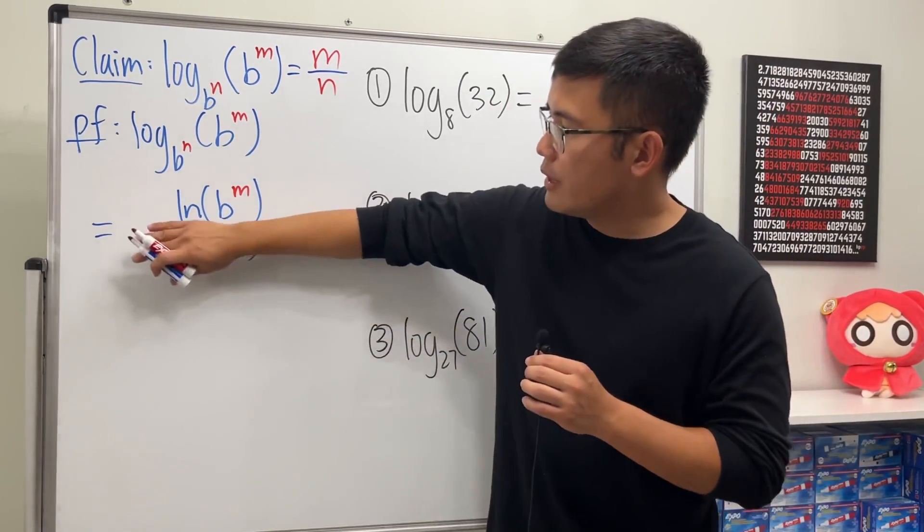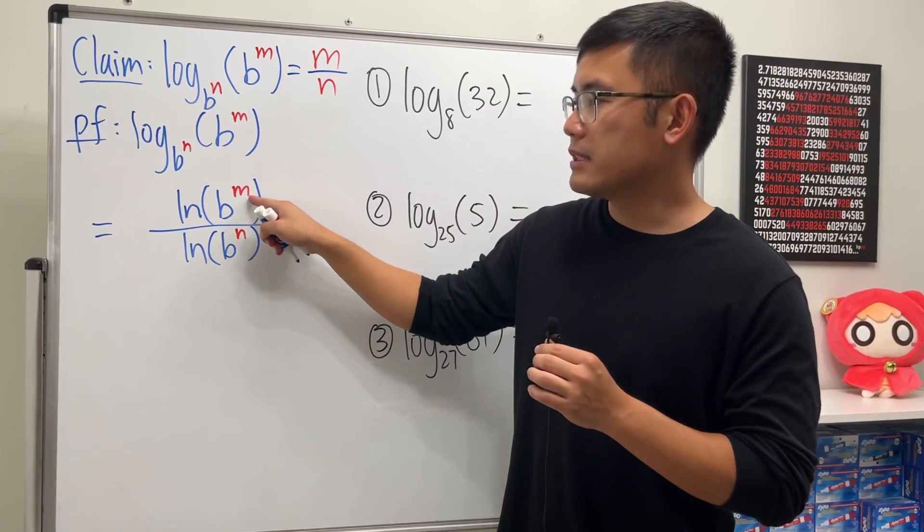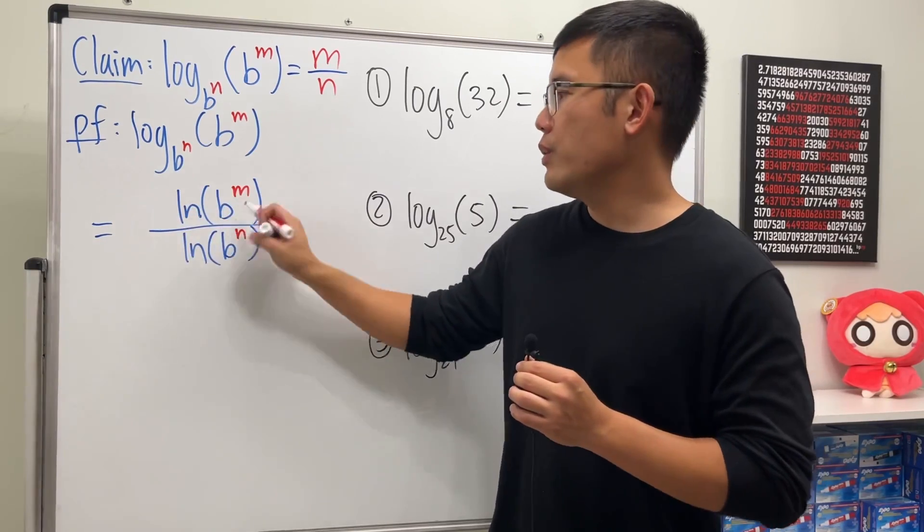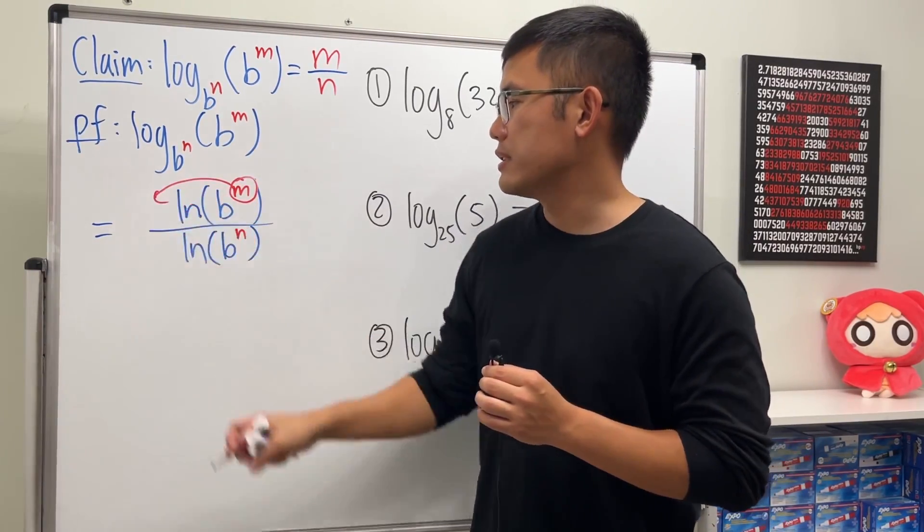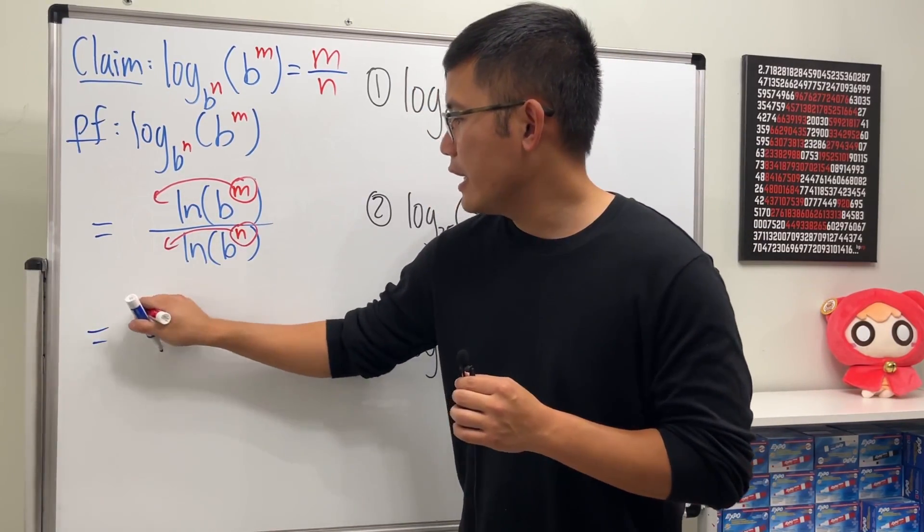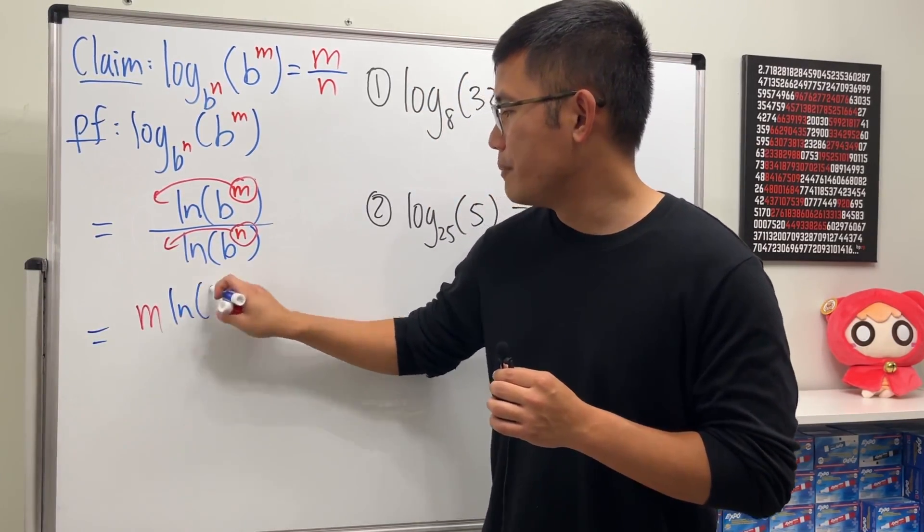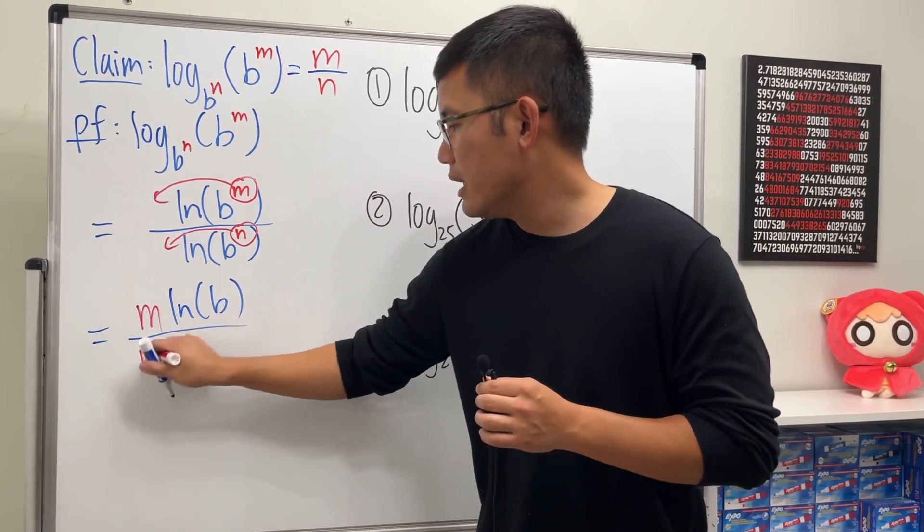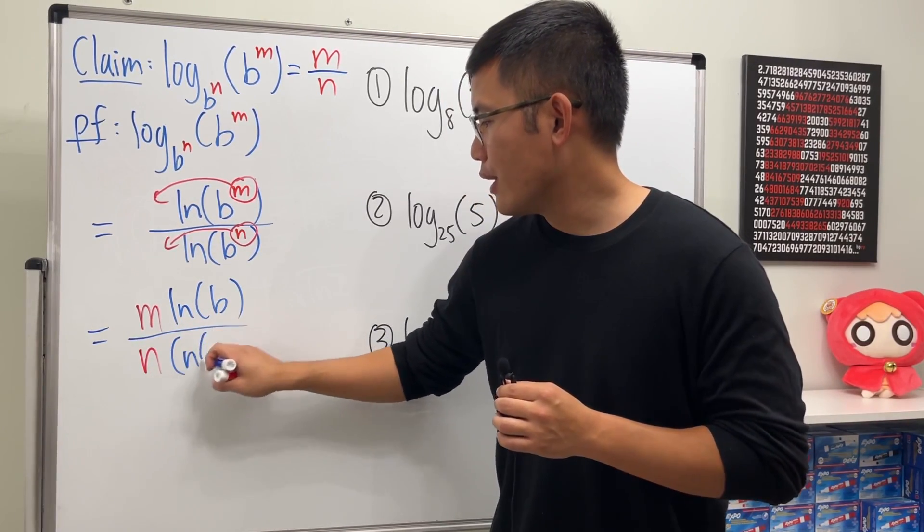Next, if you look at the top, we have b^m inside the natural log. We can put the m to the front, and similarly we can put the n to the front. So we are getting m times ln(b) over n times ln(b).